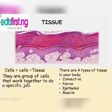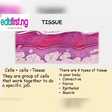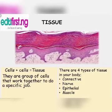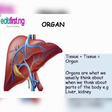Now we talk about tissue. Cells plus cells gives us tissue. Tissue is a group of cells that work together to do a specific job. There are four types of tissue in your body: connective, nerve, epithelial, and muscle.